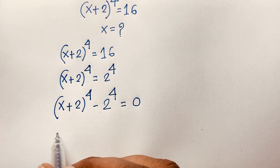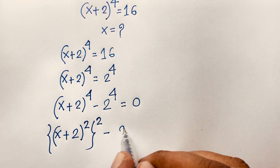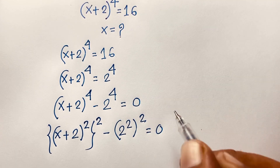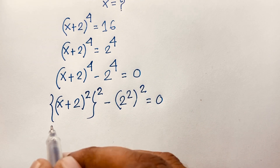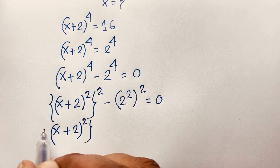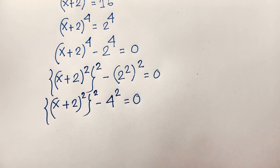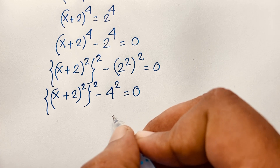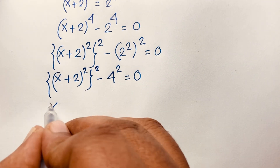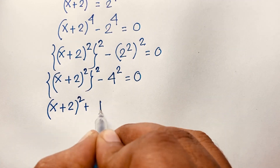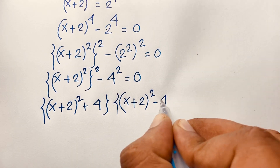Now we can write this expression as: (x plus 2) squared, quantity squared, minus (2 squared), quantity squared, equals 0. Since 2 squared is 4, this becomes (x plus 2) squared squared minus 4 squared equals 0. Using the identity a squared minus b squared equals (a plus b)(a minus b), we factor this into two brackets: (x plus 2) squared plus 4, times (x plus 2) squared minus 4, equals 0.